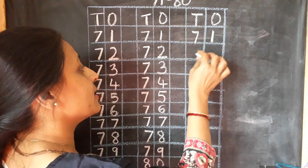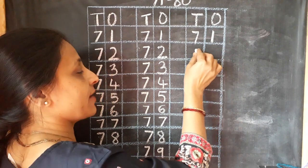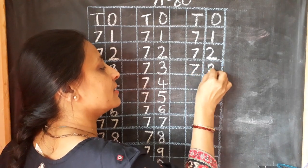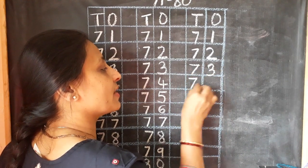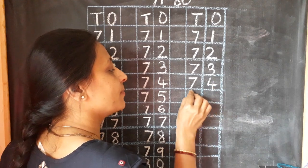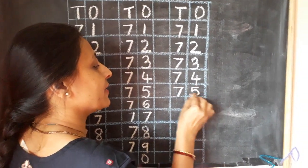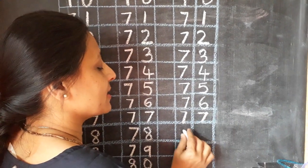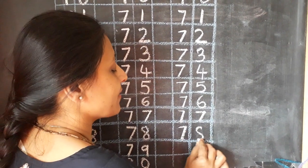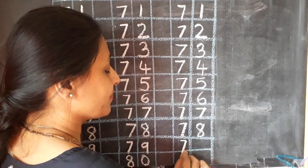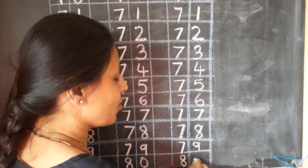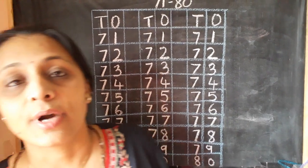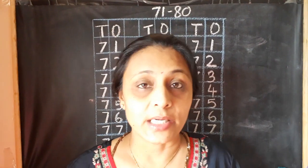71, 71. Children, now you have to say with me. Okay. 72, 72. 73, 73. 74, 74. 75, 75. 76, 76. 77, 77. 78, 78. 79, 79. And 80, 80. This way, we are going to write number 71 to 80 in our notebook.